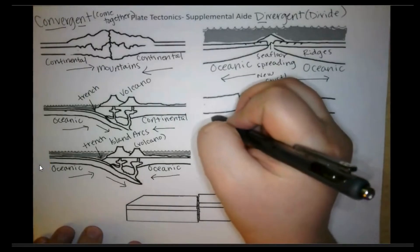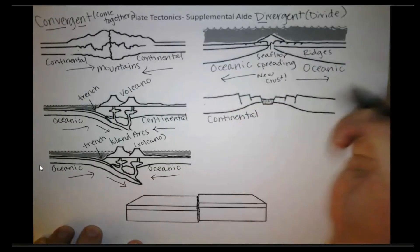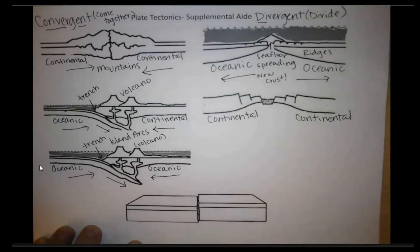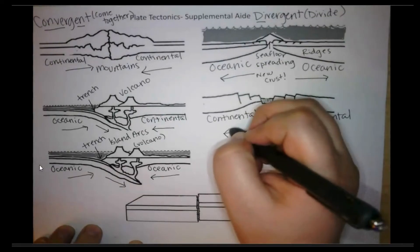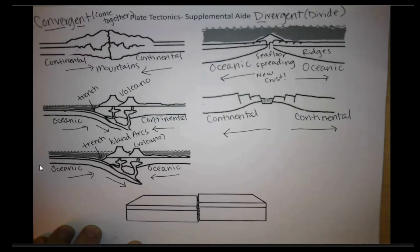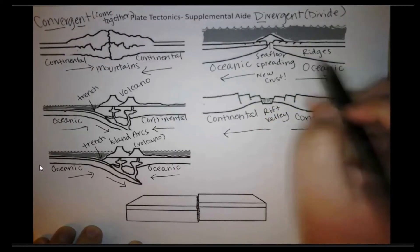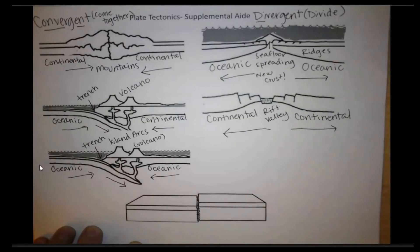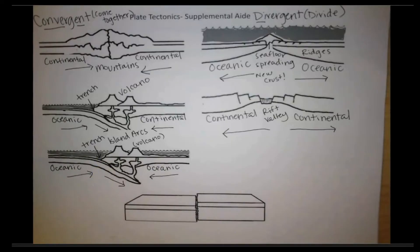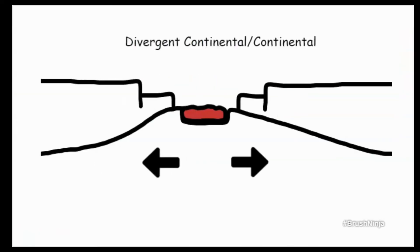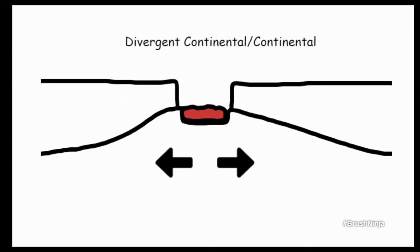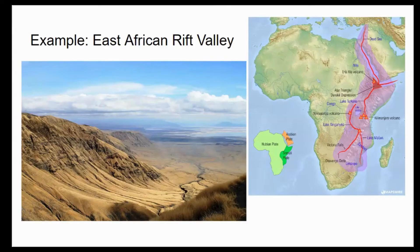Our next divergent boundary is continental-continental. Again, these plates are dividing or moving apart. When this happens, we're pushing land apart. This is where we get what's called rift valleys, where the land is pushing apart. We also sometimes have some volcanic activity and we definitely have some earthquakes. Here we have a divergent boundary where two continents are moving apart and a rift valley forms along with a little bit of volcanic activity. The most common example is the East African Rift Valley, which runs across the entire eastern side of the continent of Africa, creating these big valleys.